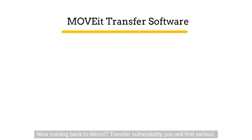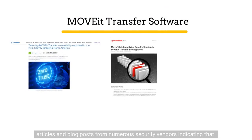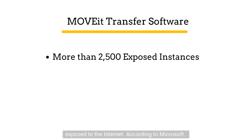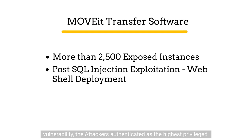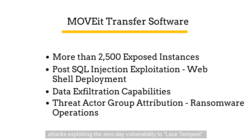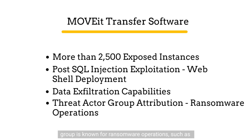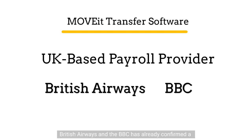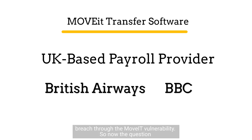Coming back to MOVEit transfer vulnerability, various articles and blog posts from numerous security vendors indicate that more than 2,500 MOVEit transfer instances were exposed to the internet. According to Microsoft, following the successful exploitation of the SQL injection vulnerability, the attackers authenticated as the highest privileged user on the system and then deployed a web shell with data exfiltration capabilities. Microsoft has attributed these attacks to Lace Tempest based on the new taxonomy — a threat actor group known for ransomware operations such as CLOP ransomware. A UK-based payroll provider used by companies such as British Airways and the BBC has already confirmed a breach through the MOVEit vulnerability.